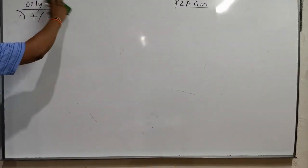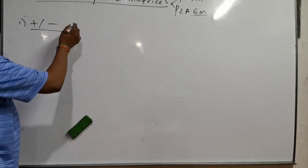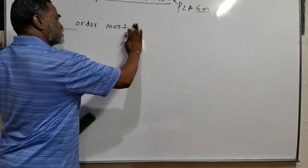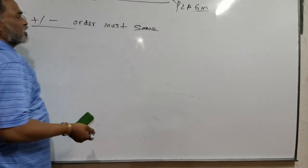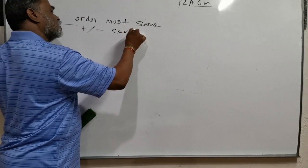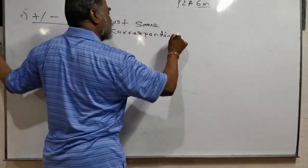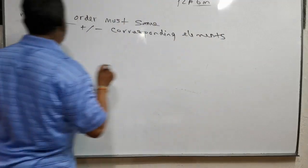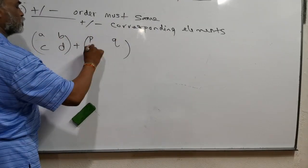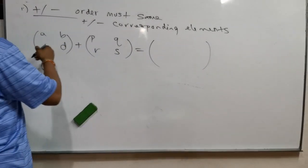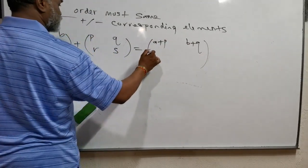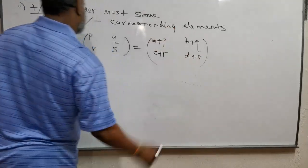For addition and subtraction of matrices, the order must be the same — if not the same, we cannot add or subtract. When adding or subtracting, you must add or subtract the corresponding elements. So [A, B; C, D] plus [P, Q; R, S] gives [A+P, B+Q; C+R, D+S].